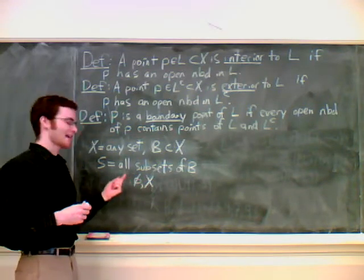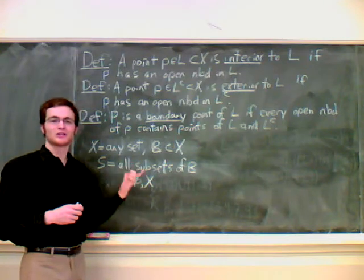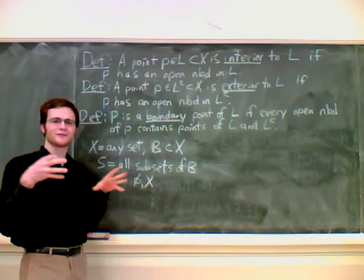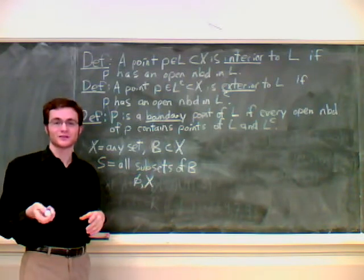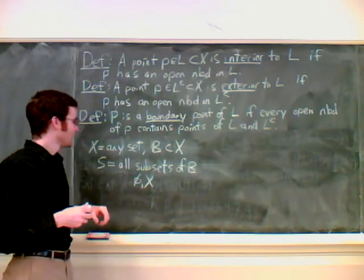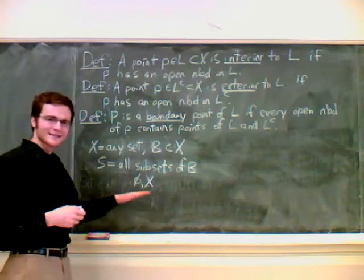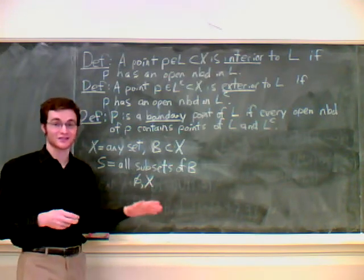You can think of this as the discrete topology on B, only kind of inside a bigger set. We talked about the discrete topology, the set of all subsets. Weird things can happen with this topology, as we're going to see.